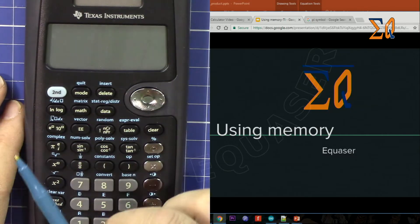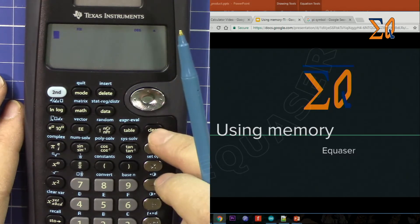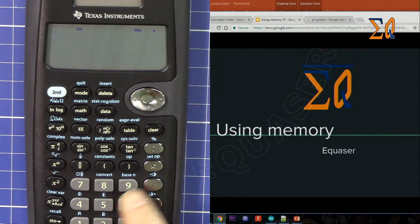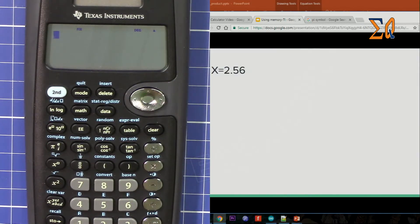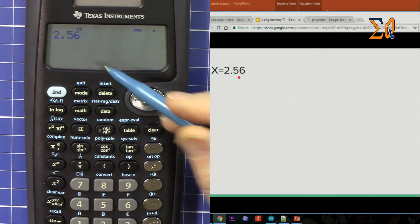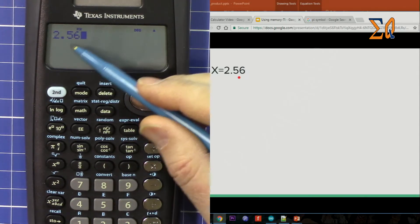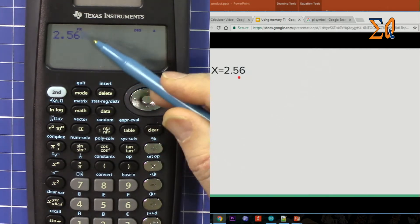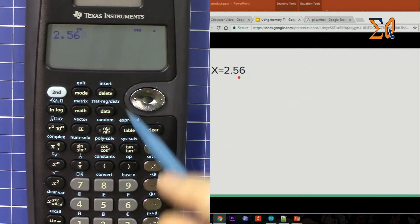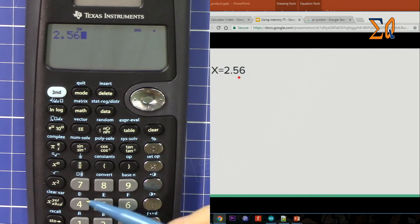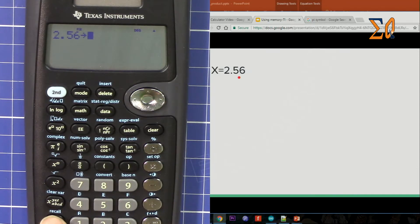Let's see, we have here X equals 2.56, so let's store it. 2.56 - bring the value. The value could be you just entered it, or the value could be the result of a calculation. So 2.56, and then for the store we press this store.